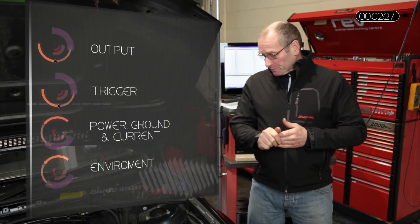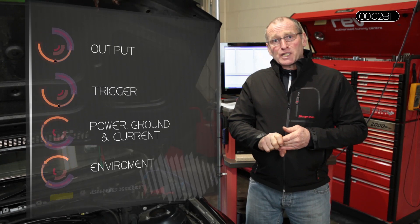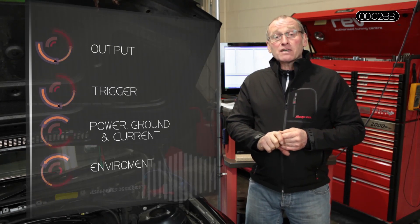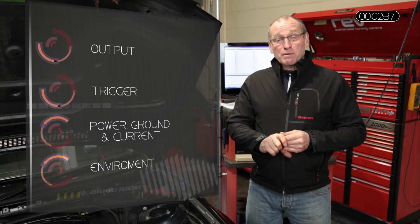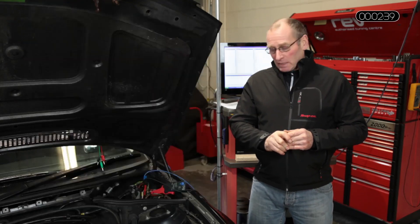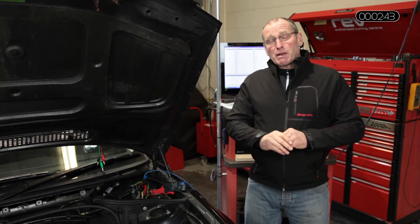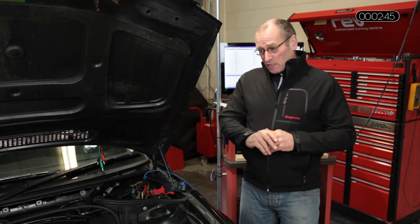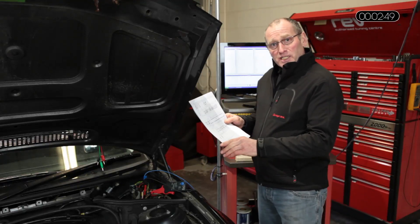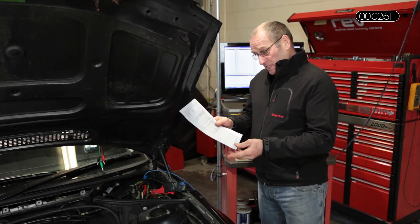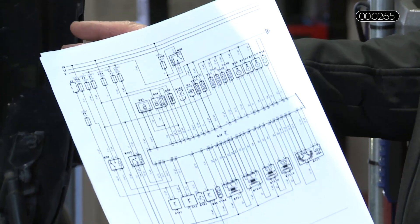I mentioned environment — if the component operates in a hostile environment, it could be that the environment is an issue. And finally, the possibility exists that there could be a software update issue as well. So there are a number of options we go through. This demonstration is about using the wiring schematics, and in particular what we're going to look at here, courtesy of Autodata, is this particular BMW 318 compact, the E46 compact.